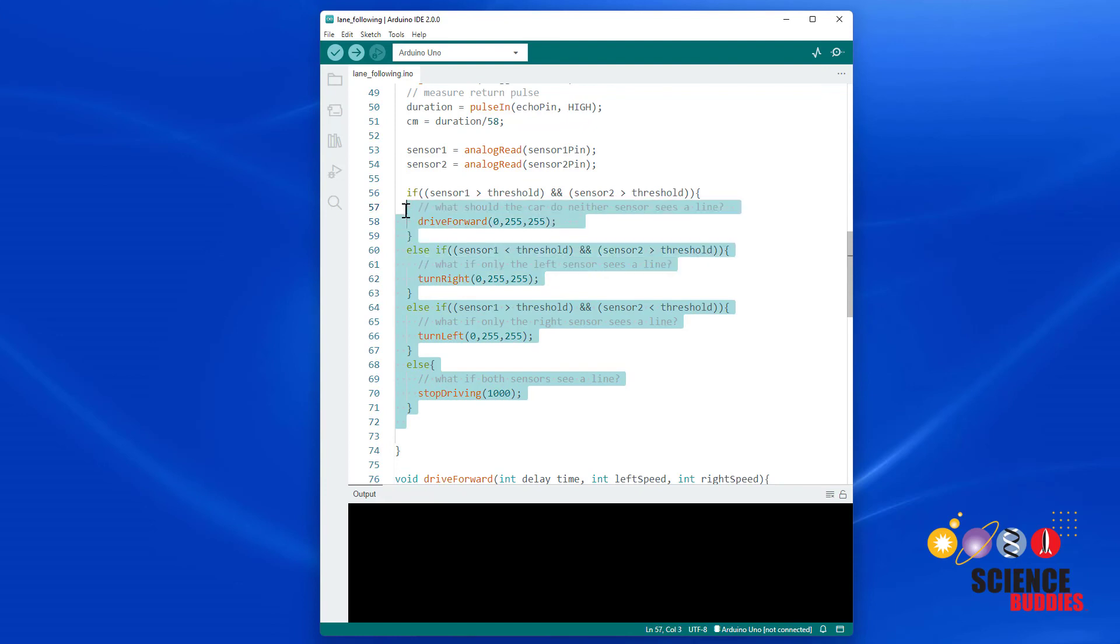This code is an example from a previous video that only does lane following using the infrared sensors, but doesn't use the ultrasonic sensor. Since everyone's track and algorithm will be different, there isn't a single correct answer for us to show here. The final program that you write will be up to you, but you should have all of the pieces you need to write it.